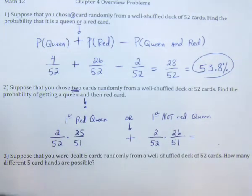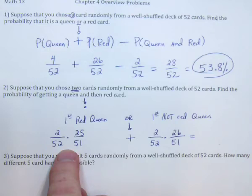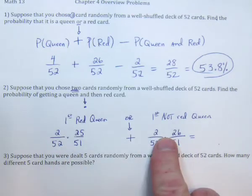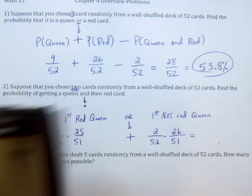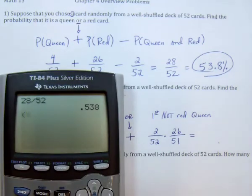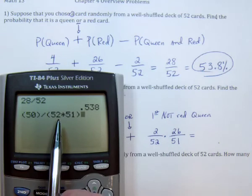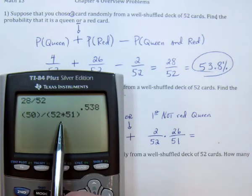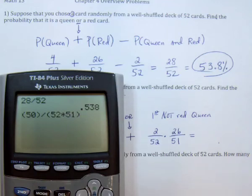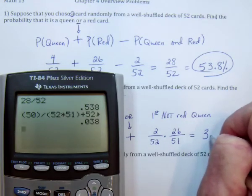Calculator time. This is going to be 50 over 52 times 51, and this part is 2 times 26, which is 52. Note: when there's more than one thing in the numerator or denominator, you need parentheses. The other one is 52 divided by (52 times 51). The grand total would be 3.8%.